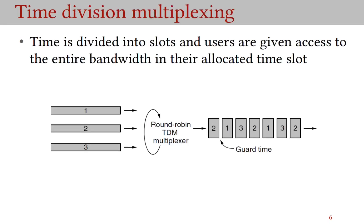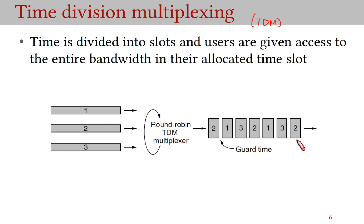In time division multiplexing, or TDM for short, time is divided into slots and users are given access to the entire bandwidth in their allocated time slot. Typically users are given time slots in round-robin order. So starting from an earlier time, we might give a time slot to user 2, then to 3, then to 1, then back to 2, 3, 1, and so on.